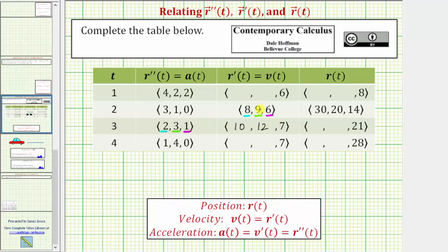Checking the velocity in the z direction, it starts at six, and then for one second it accelerates at a rate of one meter per second squared. Six plus one gives an ending velocity in the z direction of seven meters per second.